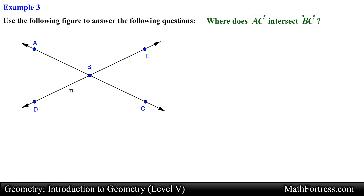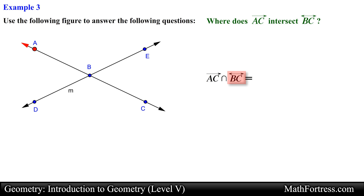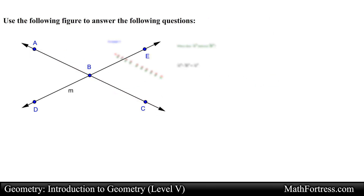Let's try the next example: where does ray AC intersect line BC? Using set notation this translates to ray AC intersection line BC. Recall that a ray is the set of all points that starts at one endpoint — in this case point A — and goes in the direction of another point, in this case point C. A line is a set of all points that extends infinitely in both directions. We are looking for the points that both ray AC and line BC have in common. The common points start intersecting at point A and extend infinitely in the direction of point C. Therefore the intersection of ray AC and line BC is equal to ray AC.